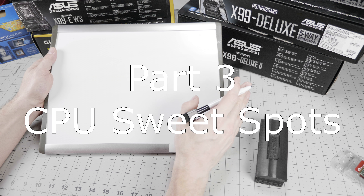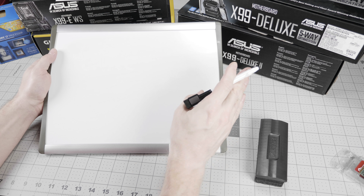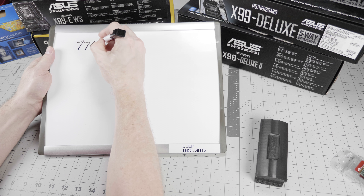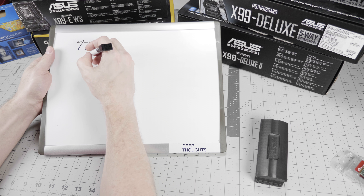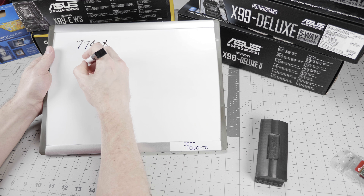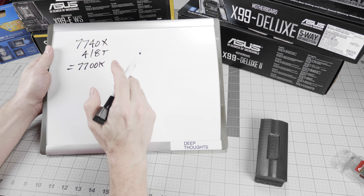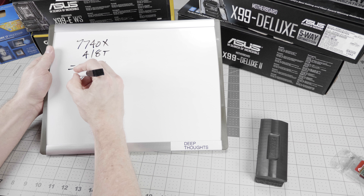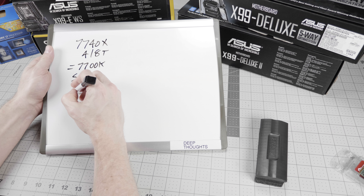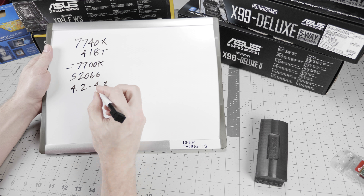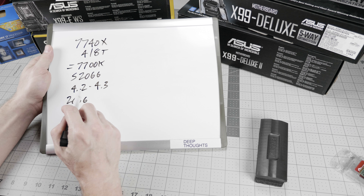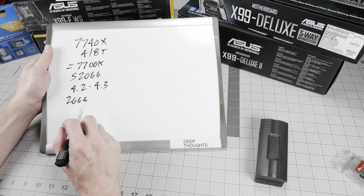The two sweet spots for price, performance, and applicability are the 7740X — that's the Kaby Lake quad-core with four cores and eight threads. If you look at the specifications for this, you'll notice this is essentially a 7700K CPU put into the new socket 2066 package. It's the same Kaby Lake platform, same four cores, eight threads. The clock speed has been slightly bumped from 4.2 to 4.3 GHz and RAM support moves from 2400 to 2666. Those are minor changes that allow it to outperform the 7700K for bragging rights, but it's essentially the same chip — even at the same MSRP of $339 US.